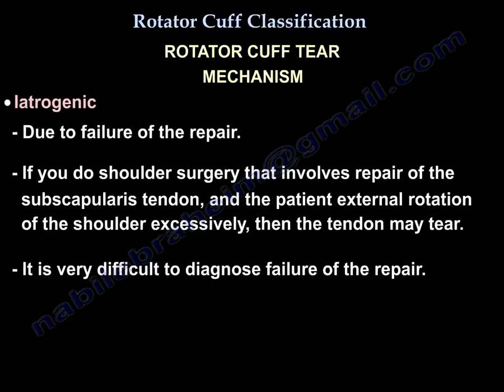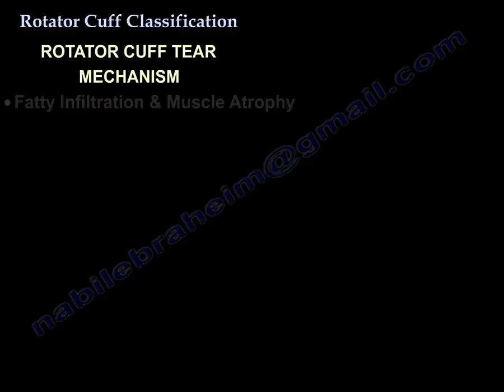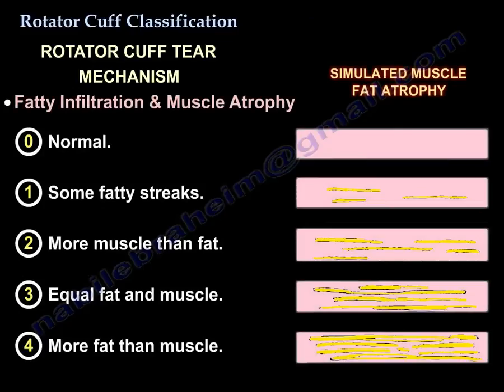Another classification is fatty atrophy. Grade zero is normal. Grade one has some fatty streaks. Grade two has more muscle than fat. Grade three has an equal amount of fat and muscle. Grade four has more fat than muscle — this is called fatty infiltration and atrophy of the muscle.